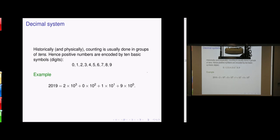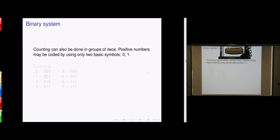We have seen the decimal system. Historically, counting is done in groups of tens — probably because we have ten fingers. So we do things in base ten and have ten digits from zero to nine. For example, 2019 equals 2 times one thousand plus 0 times one hundred and so on. We want to use the binary system — write digits using only zero or one.